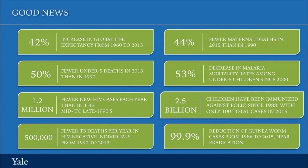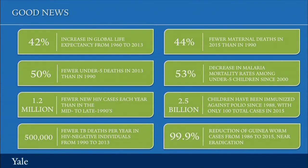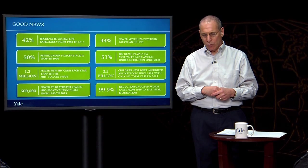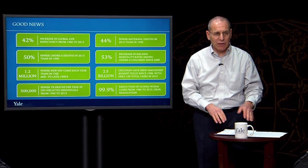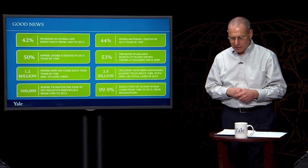More than 2.5 billion children have been immunized against polio since 1988, and polio is now down to only about 100 cases globally. Finally, there's been a 99.9% reduction in guinea worm since 1986, and there are now just a handful of guinea worm cases left in the world before it can be declared eradicated.